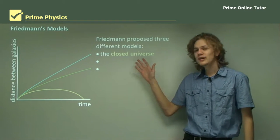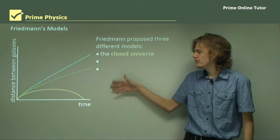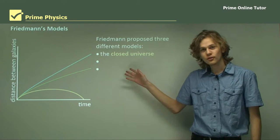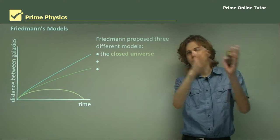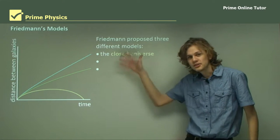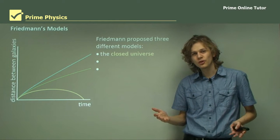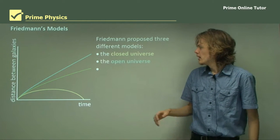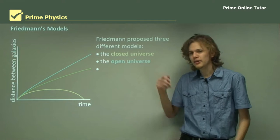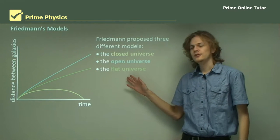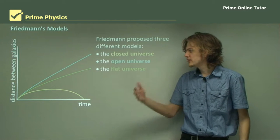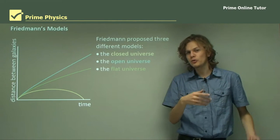Friedman proposed three different models, which are represented by these three lines on the graph. The first was the closed universe, which is the one on the bottom. As you can see, it goes up and then back down. The y-axis is roughly the size of the universe over time. The open universe, which is the top line, just keeps going up and up. And finally, the flat universe, which is the green line. It starts going up and it's starting to flatten out as you go on.